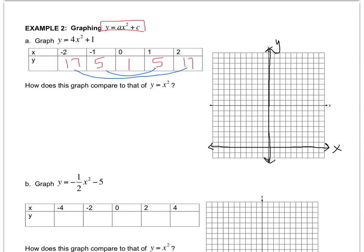So negative 2, 17. Then we've got negative 1, 5. 0, 1. 1, 5.